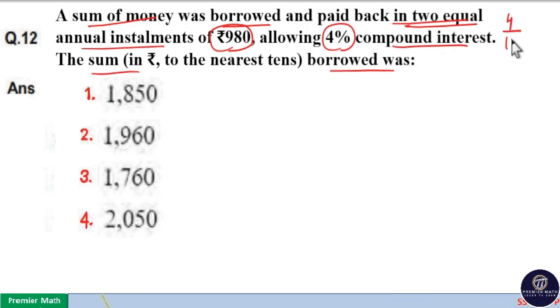Here 4% is the compound interest. 4% means 1 by 25. 1 by 25 means 25 part is the principal and 1 part is the interest generated from this 25 part at the end of one year.